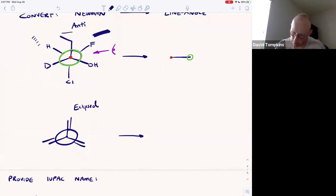Groups that are planar, neither pointing toward or away from the eyeball, are simply lines. On the front carbon, there's an ethyl group going up above the eyeball. Anti to that is a chloride on the back carbon going straight down.